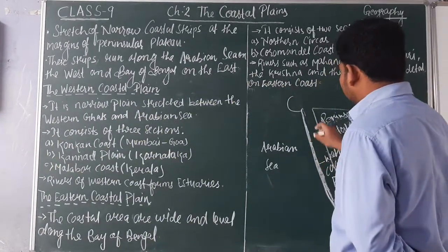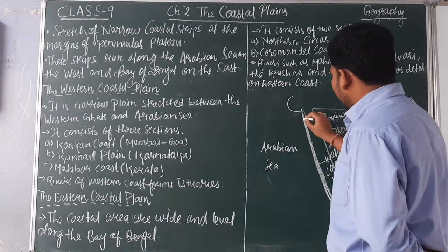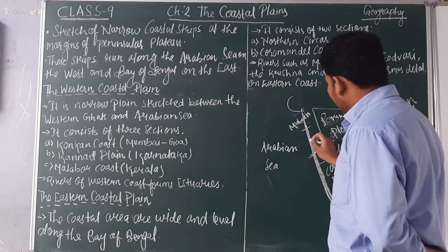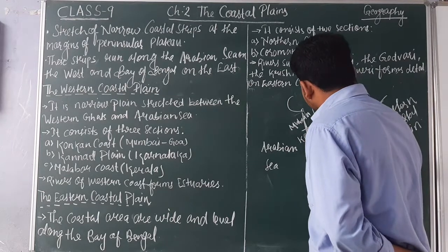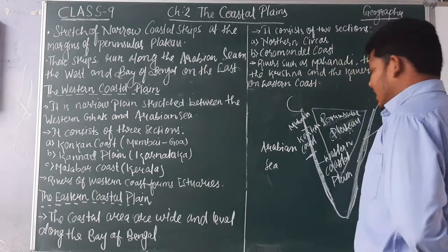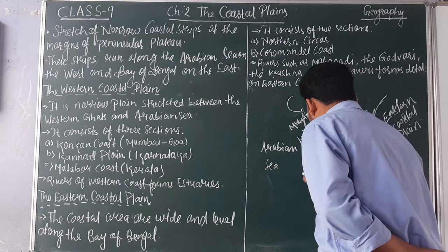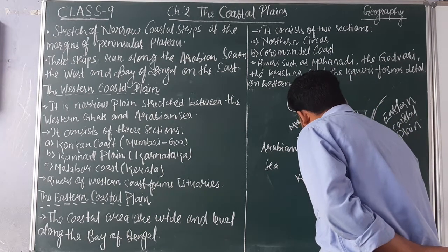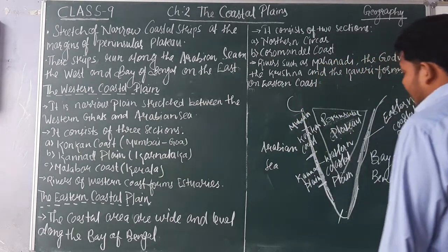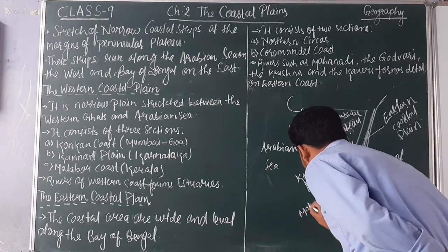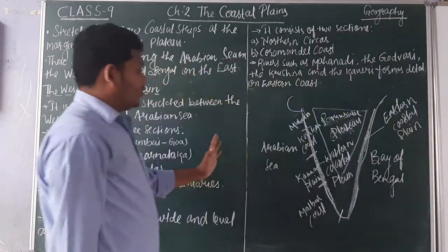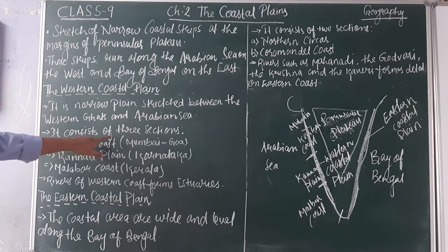The Western Coastal Plain has been subdivided into three parts. The southernmost section, in Kerala, is known as the Malabar Coast. This plain consists of three sections overall.